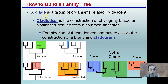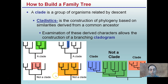To build this family tree: a clade is a group of organisms related by descent. Cladistics is the construction of phylogeny based on similarities derived from a common ancestor. Examination of these characteristics allows construction of a branching cladogram. A clade can be a single lineage or a complete common ancestor with its branches. As you can see within this box, there is no necessary common ancestor — the common ancestor exists outside the box.